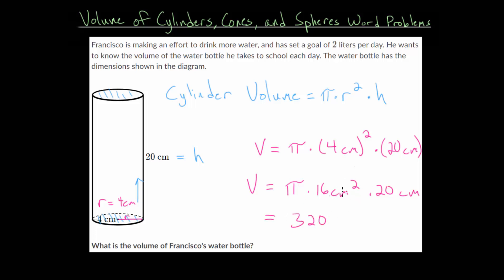We have square centimeters multiplied by centimeters, which gives us cubic centimeters. And we're multiplying everything by pi.